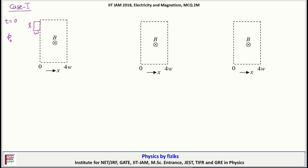So initial flux phi 0 is 0. Now in time dt, assume it moves a distance dx inside. So flux phi dash will be B L dx.